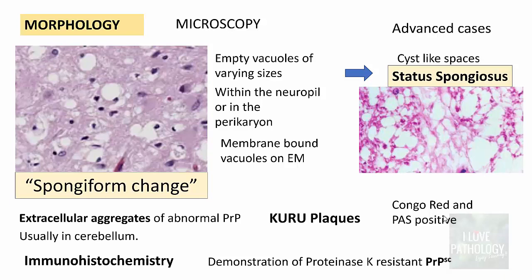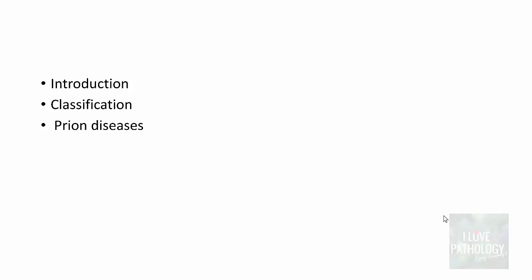Immunohistochemistry is done to demonstrate the abnormal PRPSC — specifically, the demonstration of proteinase K-resistant PRPSC, the scrapie form of prion protein, by immunohistochemistry. That completes prion diseases. The most common prion disease, Creutzfeldt-Jakob disease, has been discussed, and that concludes neurodegenerative diseases part one. In the next part, I will be discussing cortical neurodegenerative diseases, specifically Alzheimer's disease.